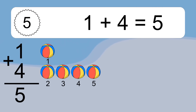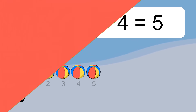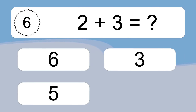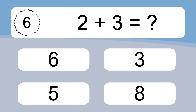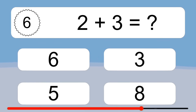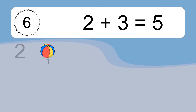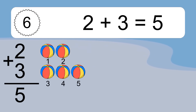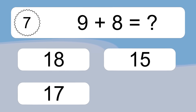1 plus 4 equals 5. Let's count it. 2 plus 3 equals 5. Let's count it: 1, 2, 3, 4, 5.